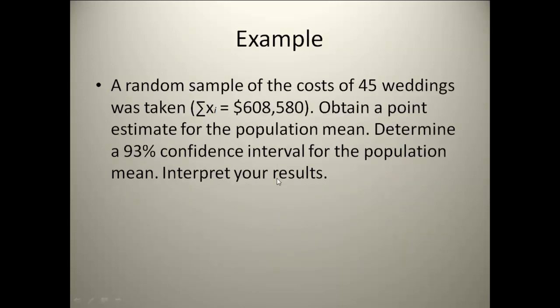So here's going to be an example we're going to do. Let's say we have a random sample of the cost of 45 weddings, and we need to first obtain a point estimate for the population mean. Right up here I told you that sigma of x sub i is 608,580. What that is telling us is that the sum of all my x values. Now this first part wants us to obtain a point estimate for the population mean. Basically, what that's telling us to do is to calculate the sample mean. So find our x bar and use x bar to estimate the population mean.